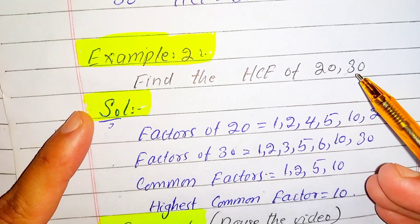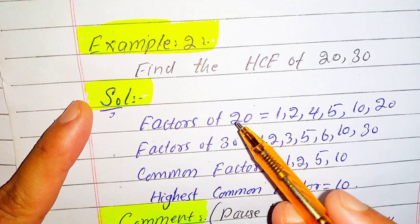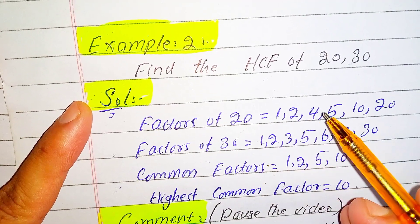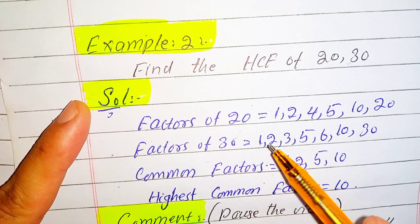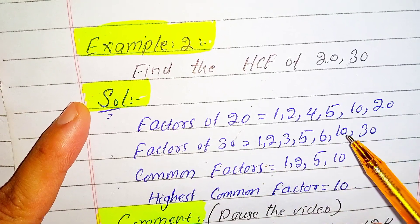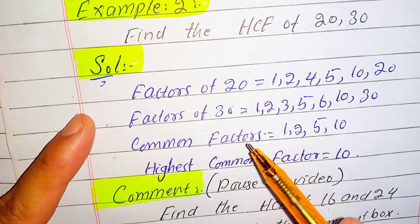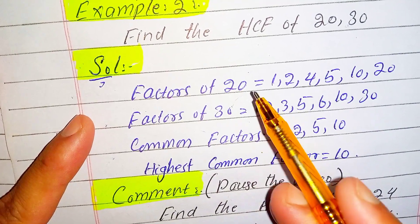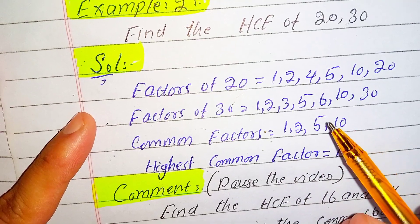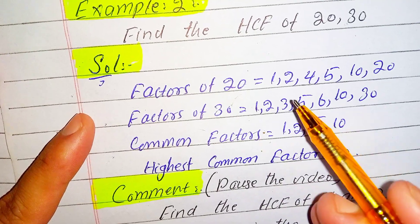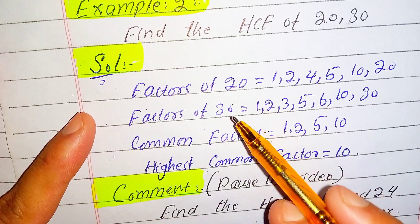First, we find the factors of 20, which are 1, 2, 4, 5, 10, and 20. The factors of 30 are 1, 2, 3, 5, 6, 10, and 30. Now we look for the common factors. The common factors of 20 and 30 are 1, 2, 5, and 10, because 1, 2, 5, and 10 are factors of both 20 and 30.